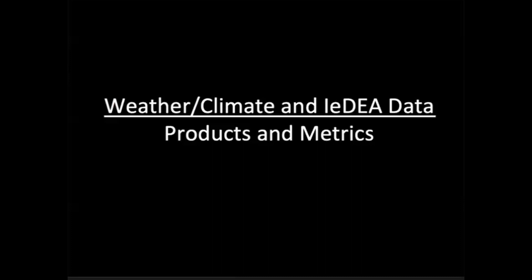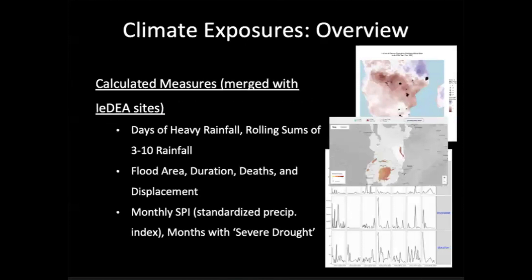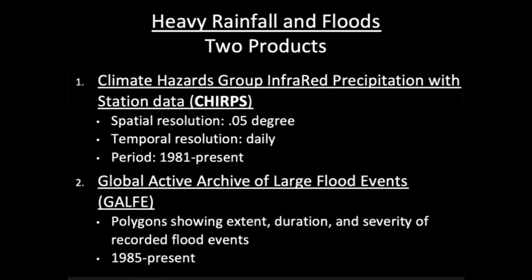Now let's talk about IDEA data and our specific weather and climate metrics and what we've calculated thus far. Our project to date has focused on rainfall measures. I'm going to go over three of those: measures of heavy rainfall — how much rain hits the ground; another of floods — what happens after the rain hits the ground and what's the actual impact; and then another looking at severe drought.